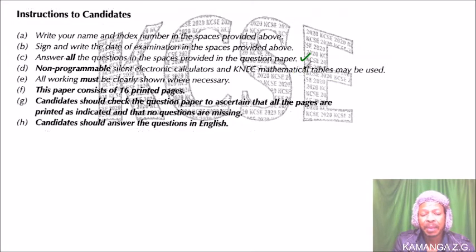All working must be clearly shown where necessary. Non-programmable silent electronic calculators and KNEC mathematical tables may be used. Here you use the fx calculator, like the one you can see here, which is normally recommended. Very important—you don't sometimes... marks will be awarded. You may not get the answer to the question, but the work that you have done is awarded marks.